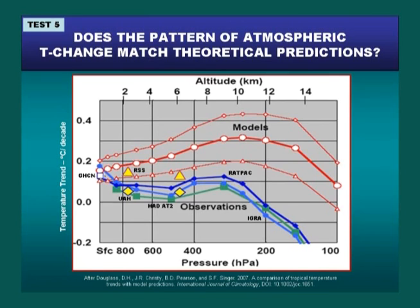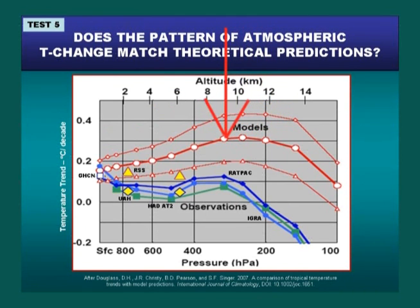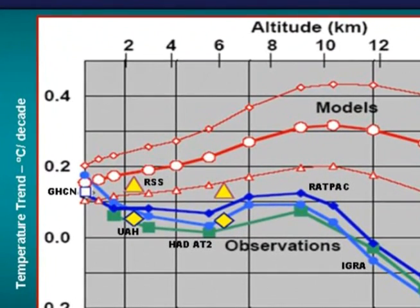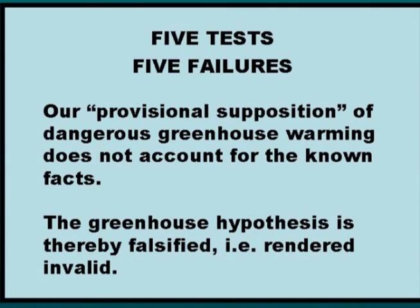The problem is, when we look at the empirical data, we find warming at the south pole. The average of all the models predicts increased rates of warming in the troposphere at heights of 8 through 12 kilometres. But the actual data — and the satellite data are the yellow triangle and diamond — all of those fall outside the error range of the model predictions. So the empirical test of the theoretical prediction fails. Five tests, five failures. The greenhouse hypothesis is thereby fossilized.